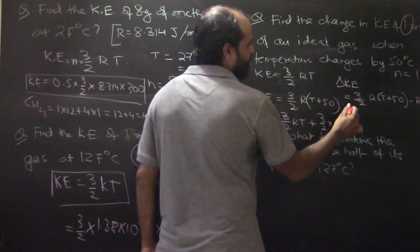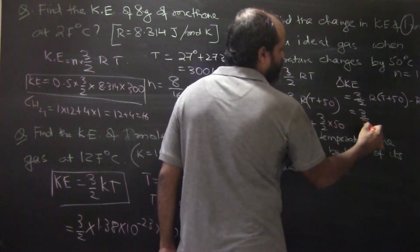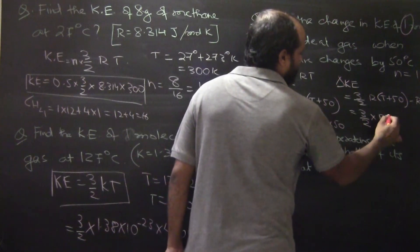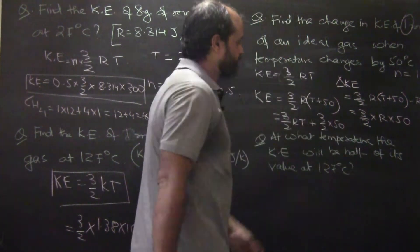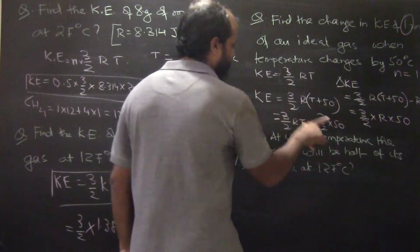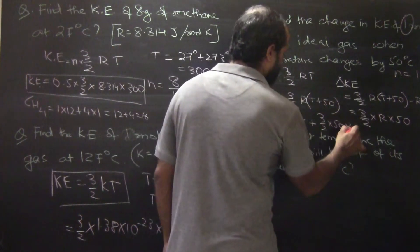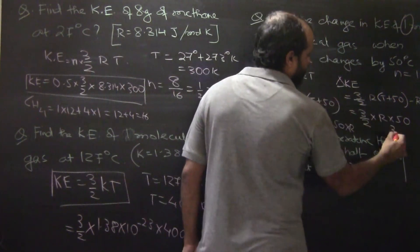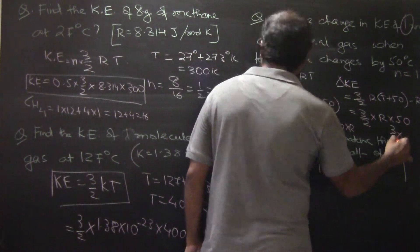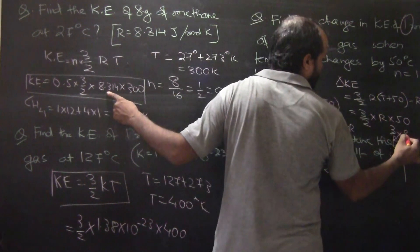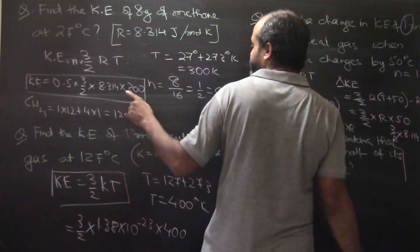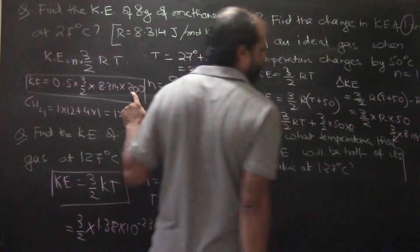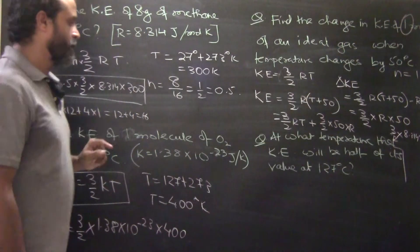So RT and RT get cancelled. This will be 3 by 2 into R into 50. If you put the values, you get 3 by 2 into R — the value of R is 8.314 — into 50, and this will be in Joules.